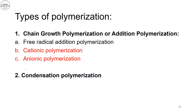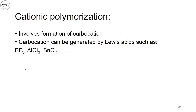There are also other types of polymerization — physical polymerization — that we will cover later on in this course. Now moving to cationic polymerization. From the name you can see that it involves the formation of a carbon cation. This carbon cation can be generated from Lewis acids such as PF3, AlCl3, or SnCl4.